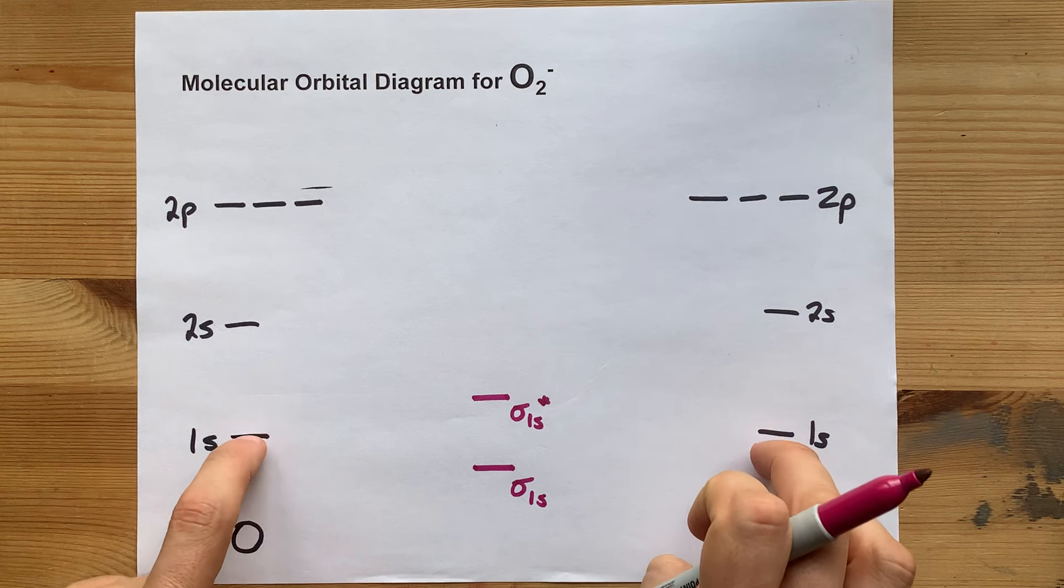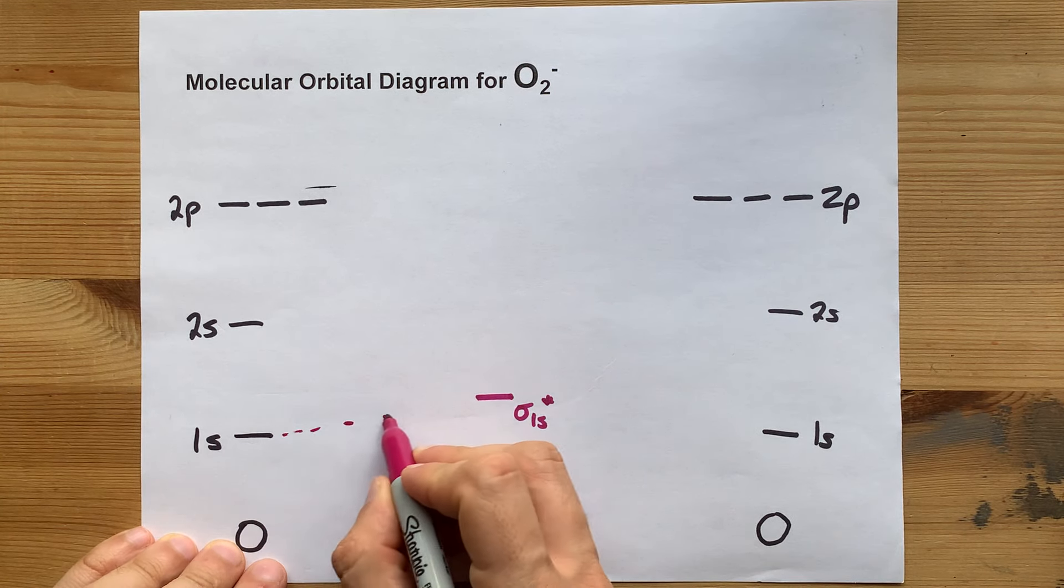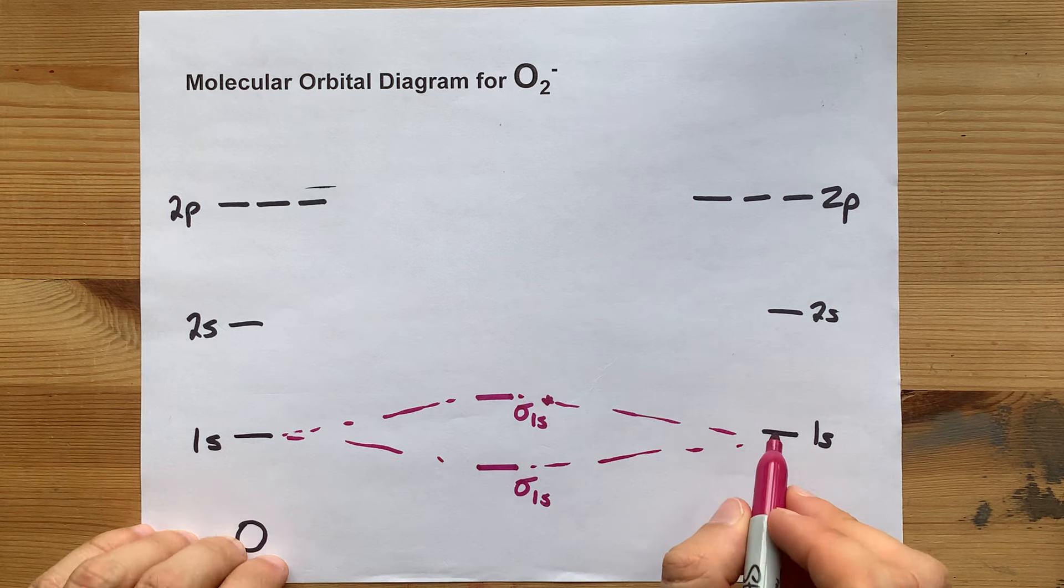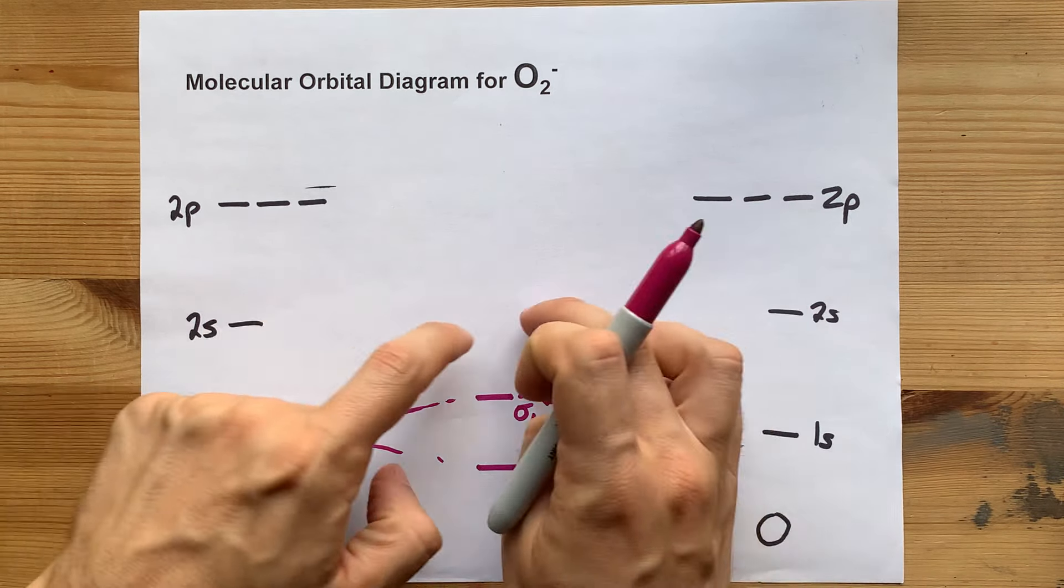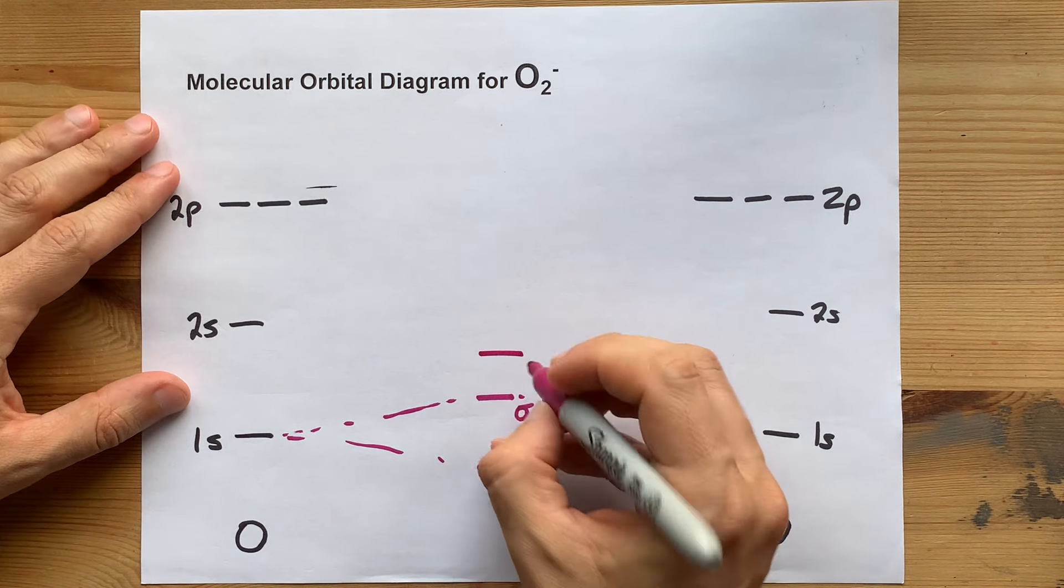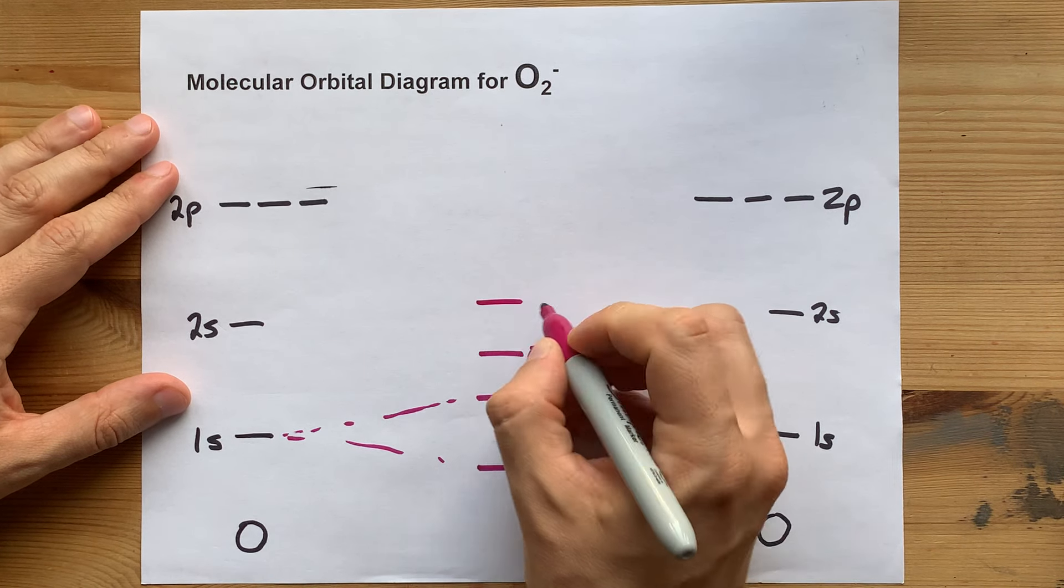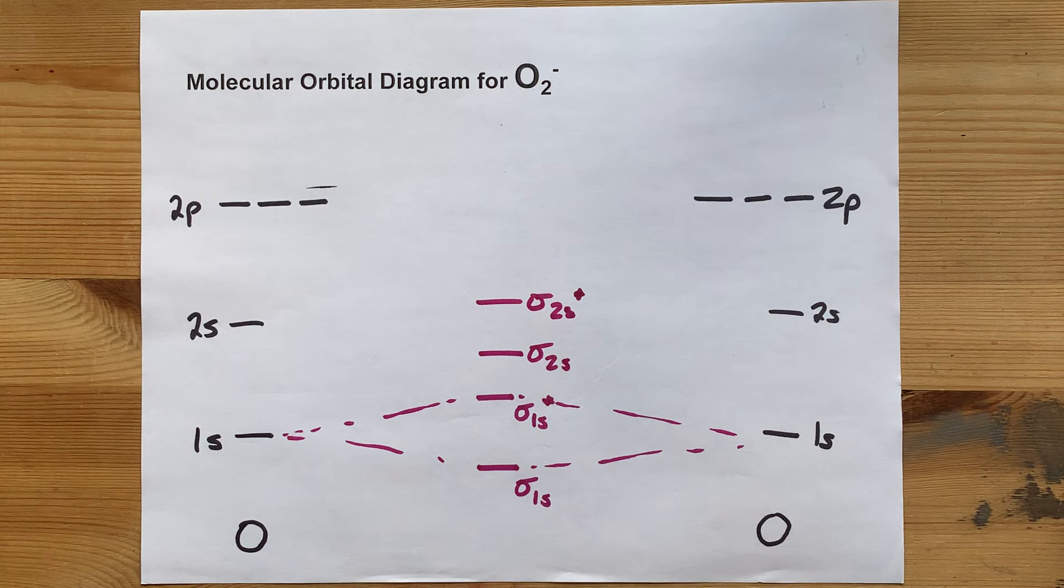The average energy here is the same as the average energy here. Lots of teachers will have you draw little dotted lines to show where those are leading, but with a marker that's going to make this pretty messy. When the 2s orbitals overlap, you're going to end up with a sigma 2s bonding orbital and a sigma 2s antibonding orbital.